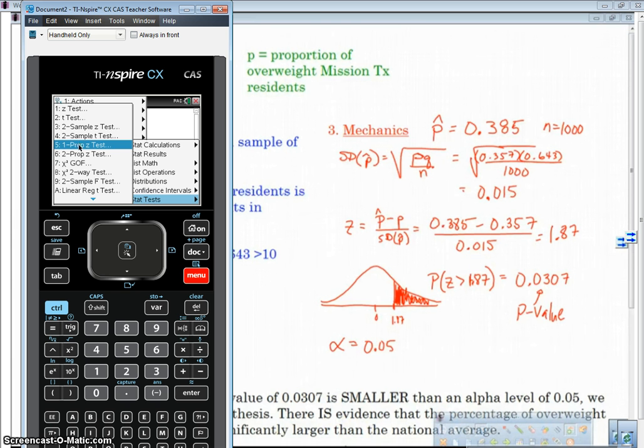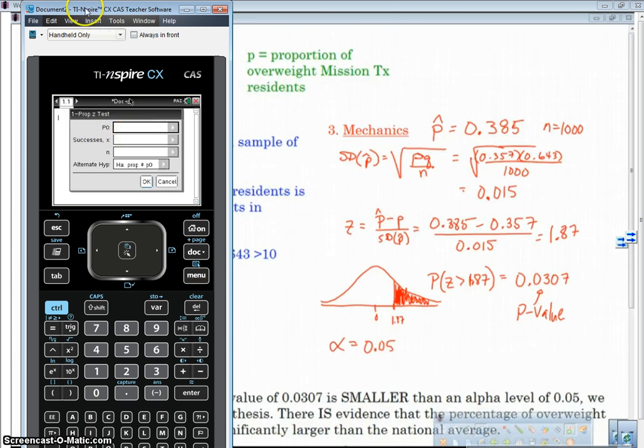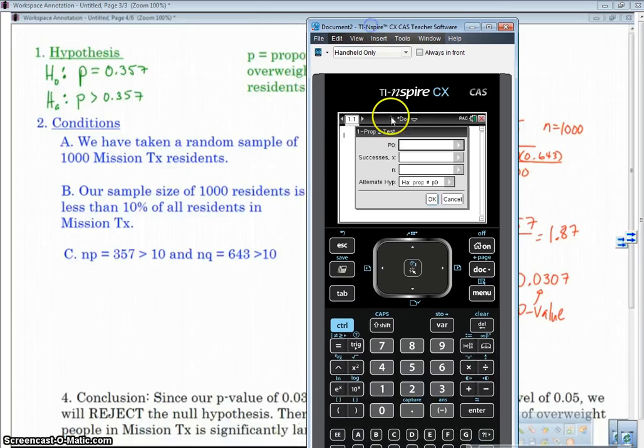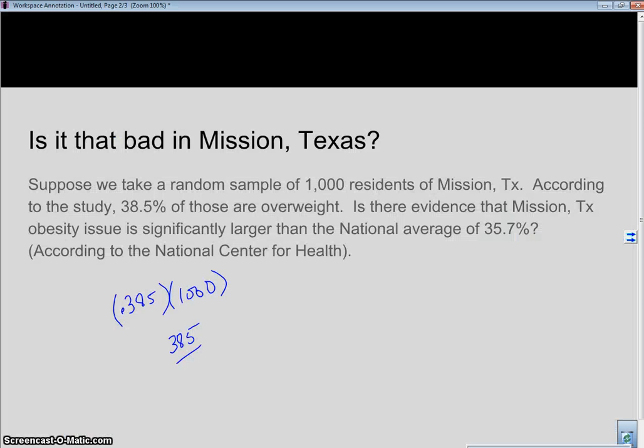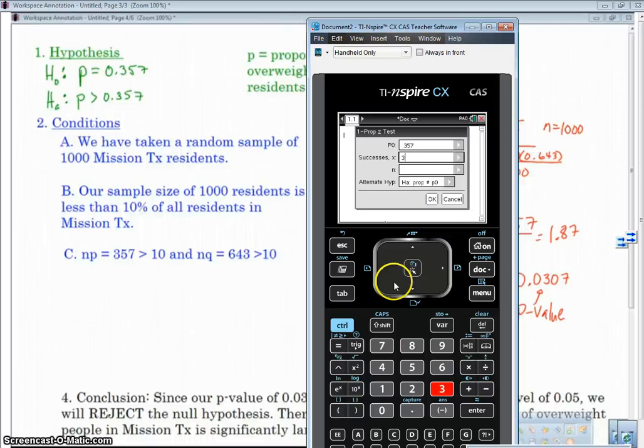So let's go ahead and do the one prop Z test. That's what we're doing. We're doing a one proportion Z test. And we need first the null hypothesis. So the proportion for the null hypothesis P is going to be 0.357. So we're going to go ahead and enter that in there. Next, X is the number of successes. Now, we just calculated that in the previous page. So that was, I believe it was 385. Let's just check real quick. 385. All right. So we got 385. And our N was 1,000. We had 1,000 people in our sample. All right. So now we're going to do our alternate hypothesis, and that's going to be greater than. So we're going to have prop greater than P₀. So we're going to hit OK.